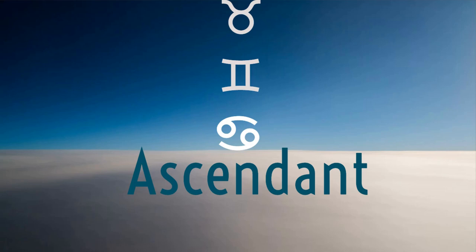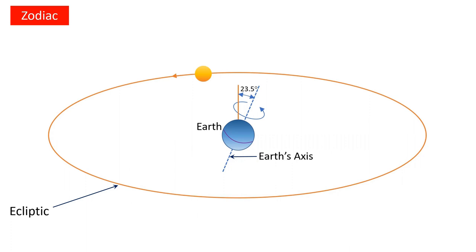To make it easier to understand what ascendant or lagna is, we are going to use this geocentric perspective — that is, how things appear from Earth. Take a look at the diagram on the screen. Here the Earth is in the center, and the orange circle around it is called the ecliptic, or Bhagamandala, which is the Sun's apparent path through the sky as seen from Earth. In other words, the Sun appears to take this path over the course of a year — otherwise we know it's the Earth that revolves around the Sun.